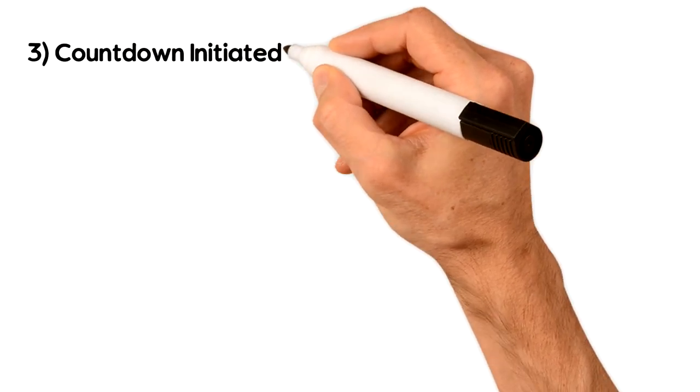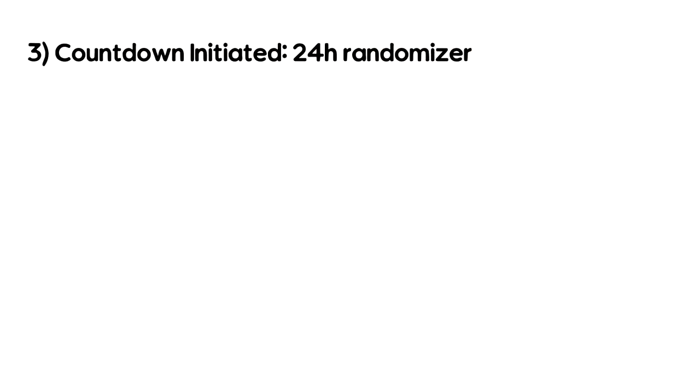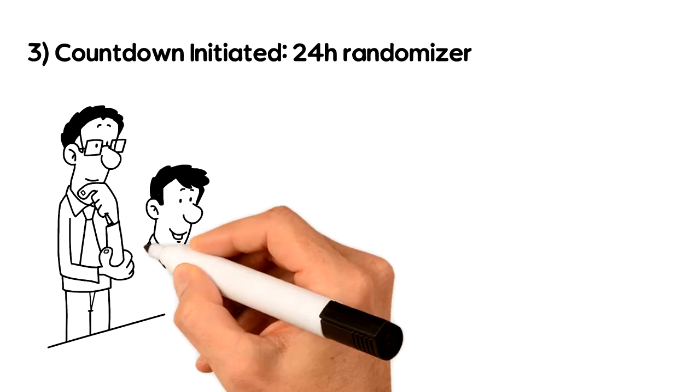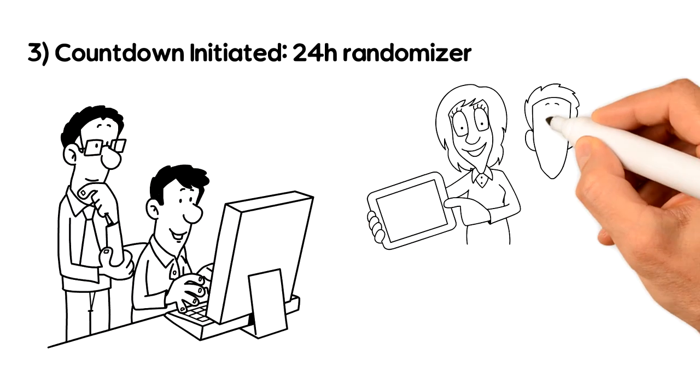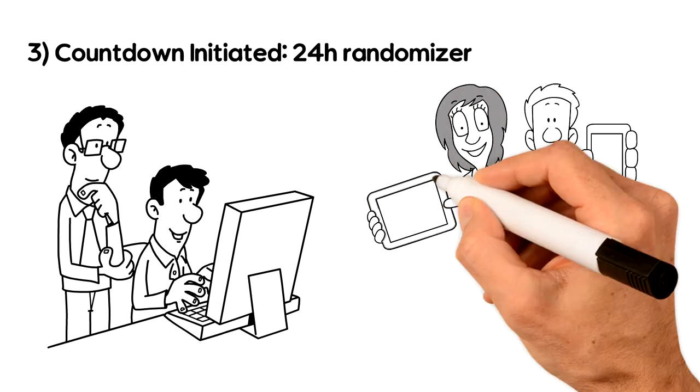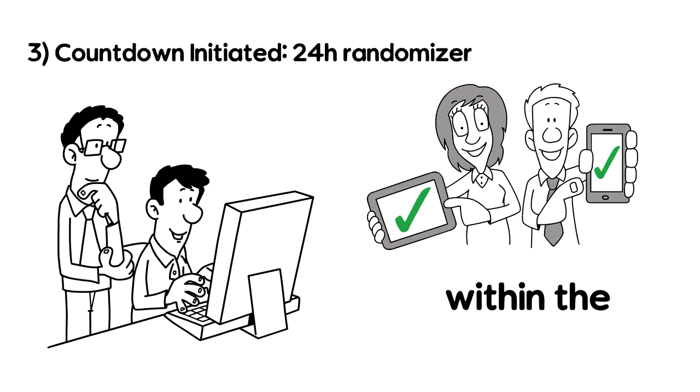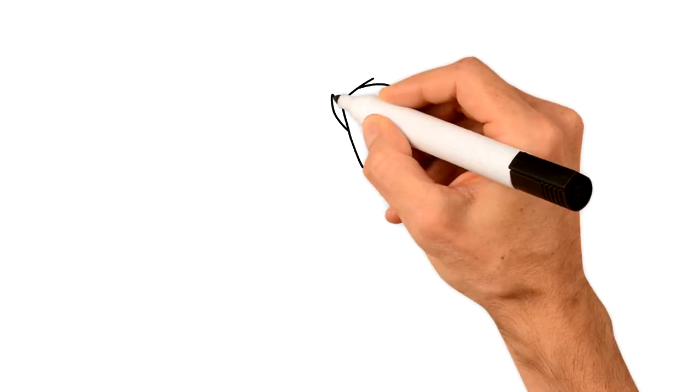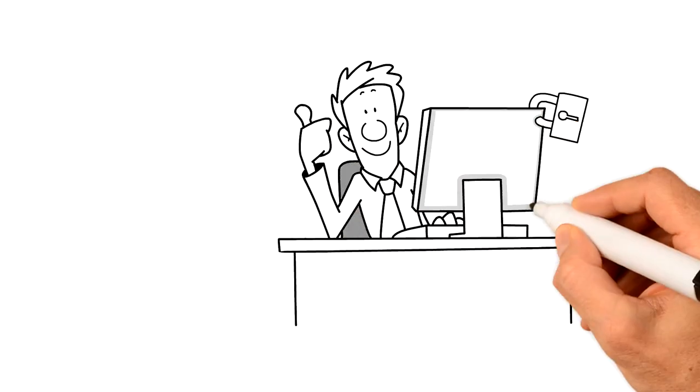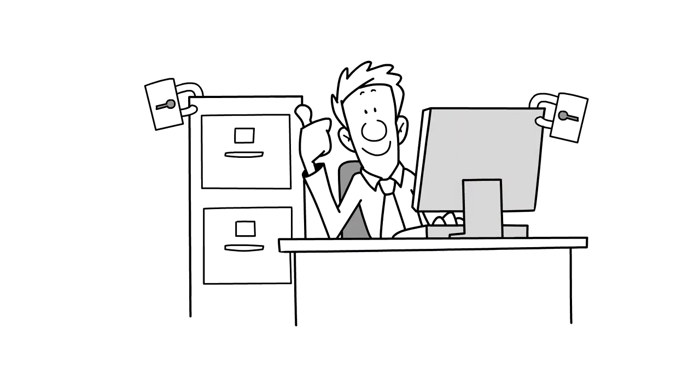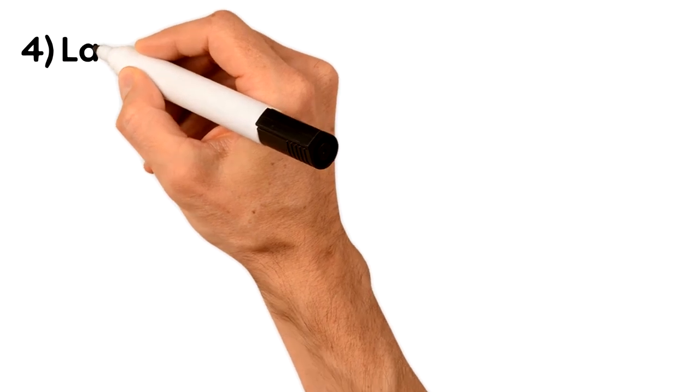3. Countdown initiated, 24-hour randomizer. As soon as the transaction is signed by two custodians, the process is started to send the tokens to our wallets at a random time within the next 24 hours. No one knows the exact time to prevent anyone gaining an unfair advantage.